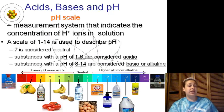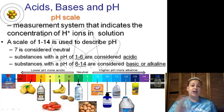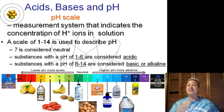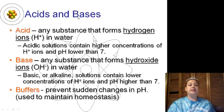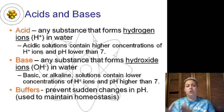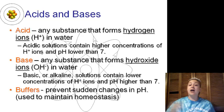Acids, bases, and pH. The pH scale is a measurement system that indicates concentration of hydrogen ions in a solution. 1 to 14, 7 is equal. Below 7 is acidic, above 7 is basic or alkaline. It measures the concentration of hydrogen ions. Below 7 is more and more hydrogen ions. Above 7 is less and less hydrogen ions. Acids are any substance that forms hydrogen ions in water. Acidic solutions contain a higher concentration of ions but lower on the pH scale. Bases form hydroxide ions (OH-) in water. Basic or alkaline solutions contain lower concentrations of H+ ions and pH higher than 7. Buffers prevent sudden changes in pH, used a lot inside our bodies to maintain homeostasis.